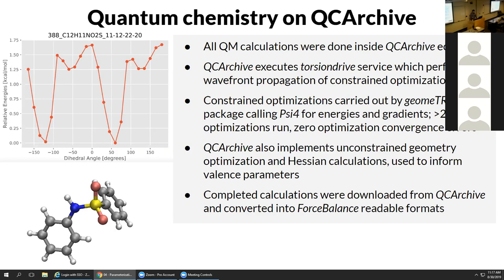QCArchive also implements other types of optimizations we need, such as unconstrained geometry optimization and Hessian calculations to give us bond and angle force constants. Once calculations are finished on QCArchive, it's only a matter of some scripting to download and convert them into a format that ForceBalance can read.